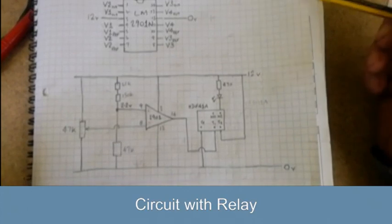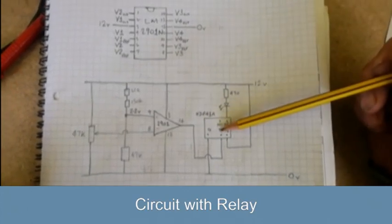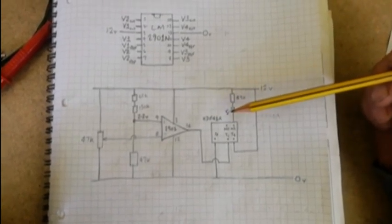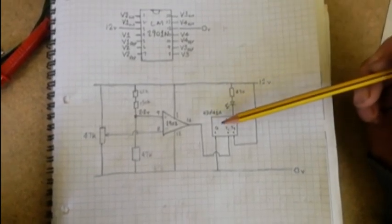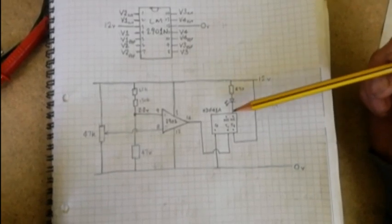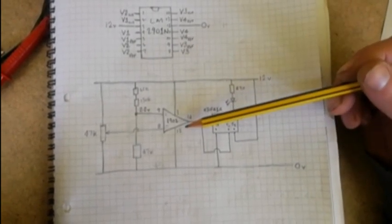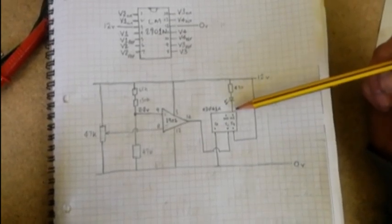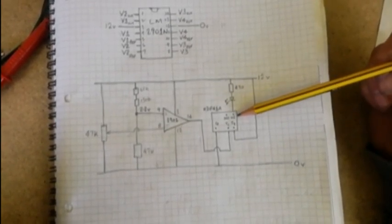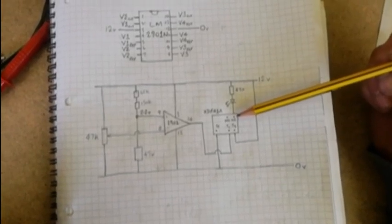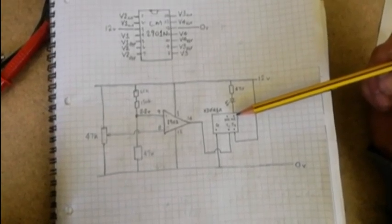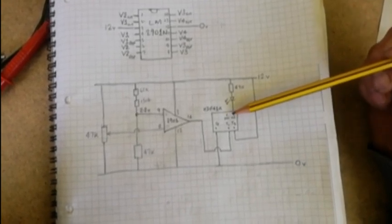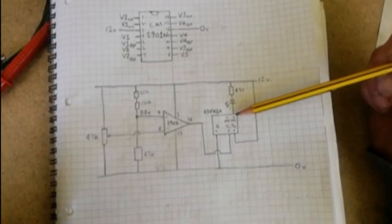I've now modified the circuit to include an HDF41A relay. What it'll do is when the voltage is zero, the light is on - normally closed. When the voltage increases to 2.1 or whatever the set voltage is, the light will switch off.